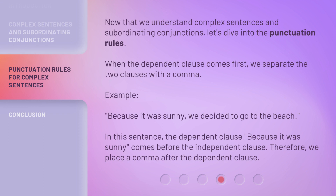Now that we understand complex sentences and subordinating conjunctions, let's dive into the punctuation rules. When the dependent clause comes first, we separate the two clauses with a comma. Example: "Because it was sunny, we decided to go to the beach." In this sentence, the dependent clause "because it was sunny" comes before the independent clause.